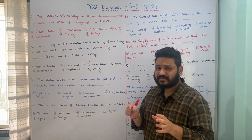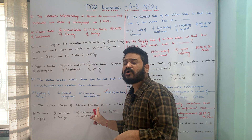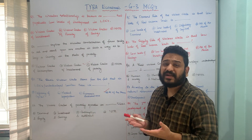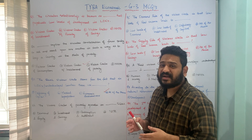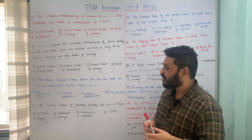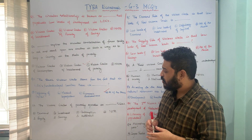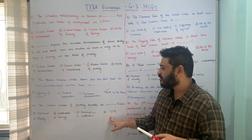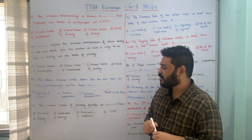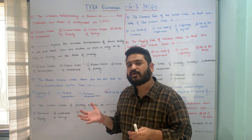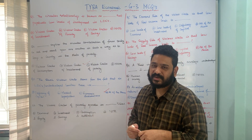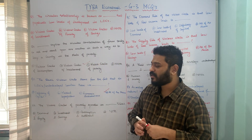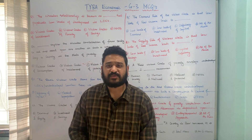The vicious circles of poverty operates on dash sides. Option A: demand and supply side. Option B: investment and savings side. Option C: consumption and investment sides. Option D: none of the above. The correct answer is option A — the vicious circles of poverty operate on both the demand as well as supply sides.